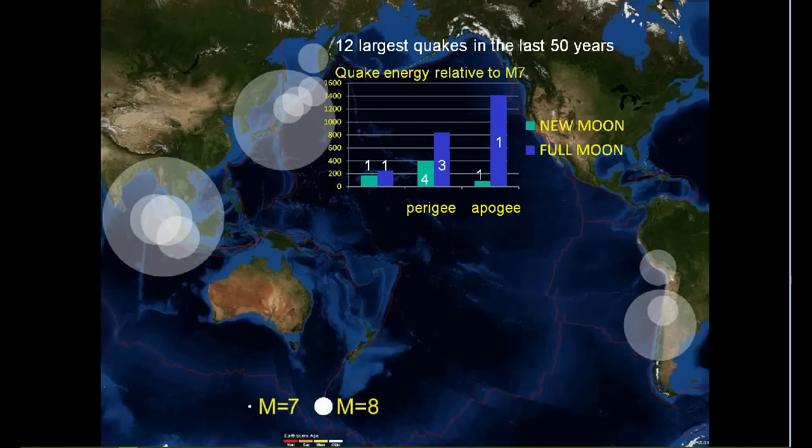The graph shows the association of individual earthquakes with New Moon, Full Moon, Perigee and Apogee. Bars on a graph show earthquake energy, and digits indicate the number of earthquakes. As we expected, the correlation between high tidal forces and large earthquakes seems quite good.